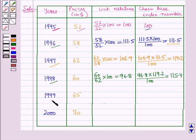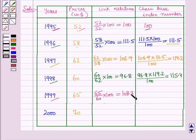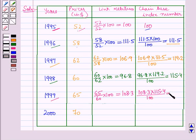For the year 1999, the link relative is 65 over 60 into 100, which is equal to 108.3, and the chain base index number is 108.3 into 115.4, whole upon 100, which is equal to 124.98.